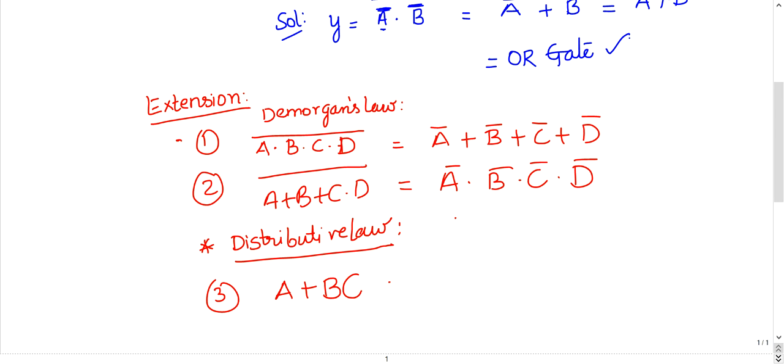A plus BC in Boolean algebra, A plus BC, very important. It is nothing but A plus B into A plus C. So A plus B into A plus C. Please try to remember this formulas. These are very simple. I think you already might have learnt.